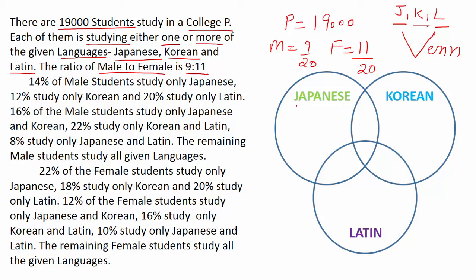The first circle is for Japanese language, the second circle is for Korean language, and the third circle is for Latin language. I am expecting that you all know about the different regions of the Venn diagram. If you don't know, simply visit our Facebook page where I have uploaded a picture showing different regions of the Venn diagram.